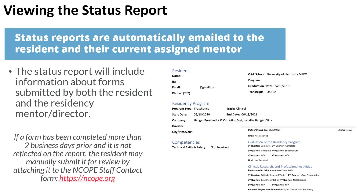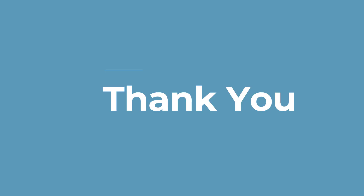If a form has been completed more than two business days prior and is not reflected on the report, the resident may manually submit it for review by attaching it to the ENCOPE staff contact form. Visit ENCOPE.org and click on the Contact Us link at the top or bottom of the website — you'll be able to send the file as an attachment and have your permanent record updated accordingly.